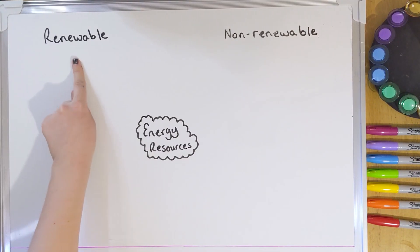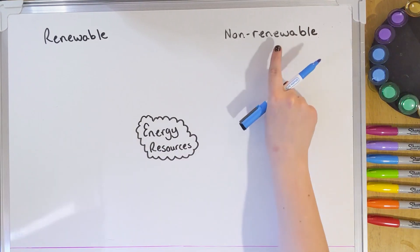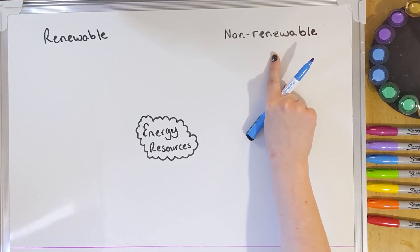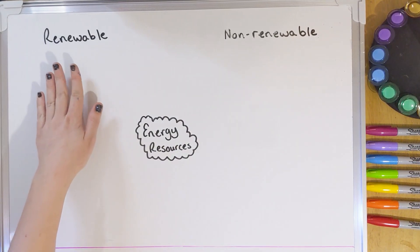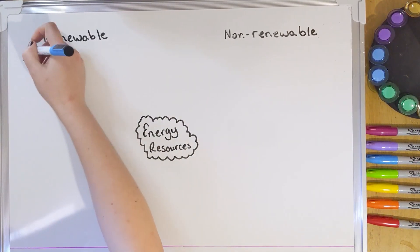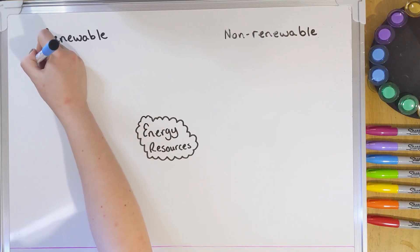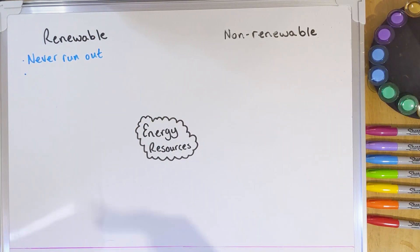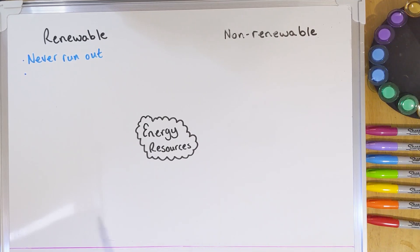Renewable energy includes things like solar power and wind power, while non-renewable energy covers things like electricity generation using coal, oil, or gas. We're going to start with the renewable side. Renewable is any resource that will never run out, and we can usually replace any of the resources before we've used them up. For example, if we're using solar power, there's always going to be the sun — we're never going to run out of solar energy in our lifetimes.